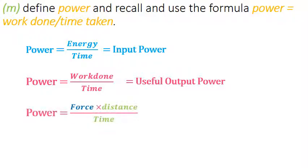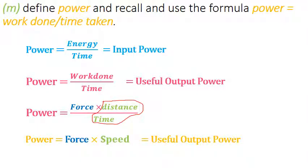The third formula comes from breaking work done into force times distance. Distance upon time is known as speed. So we can also say power equals force times speed. If in your CIE exam you are given values based upon speed and force, simply use this formula and calculate the power.